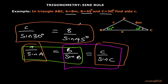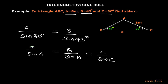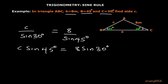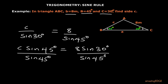The only unknown is c. We solve for c by cross multiplication, giving c times sine 45 degrees equals 8 times sine 30 degrees. To isolate c, we divide both sides by sine 45 degrees. This gives c equals 8 sine 30 over sine 45 degrees.